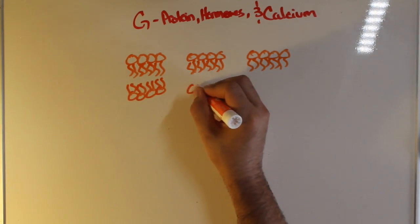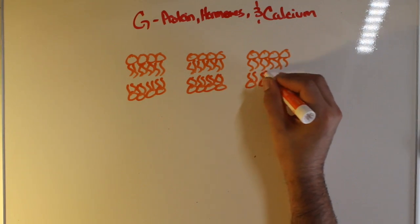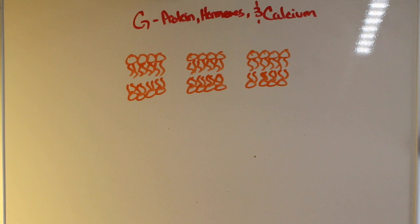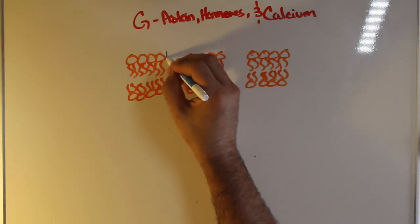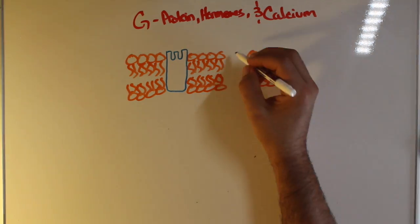Now spanning this membrane of any typical cell within the human body, whenever we're looking at G protein receptors or G protein and hormone activity, it's a protein that spans the membrane.